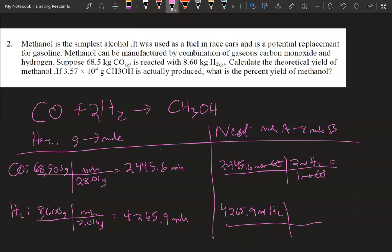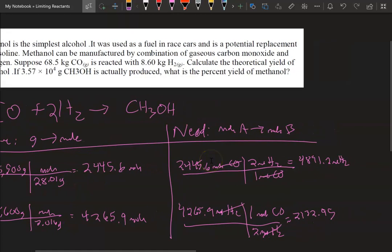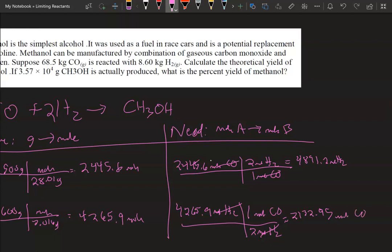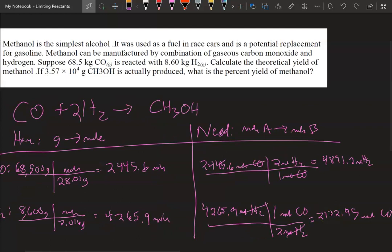Alright and so 2,445.6 times 2 gives me 4,891.2 moles of hydrogen. Now we're going to flip the ratio here. We're going to have 1 mole of CO for every 2 moles of hydrogen. Alright so the moles of hydrogen go away. Alright so take the 4,265.9, we're going to divide that by 2 and we end up with 2,132.95. And I'm actually going to keep those two decimal places, not that it's going to make a difference or anything, but it just keeps me from having to make a weird rounding.